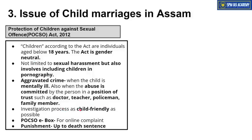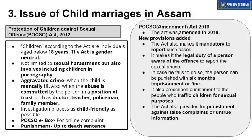Bar bar police station jaane ki zarurat na pade — online complaint karne ki bhi suvidha banayi gayi hai. Iske liye POCSO e-box banaya gaya hai. POCSO Act ke antargat jo highest level of punishment hai, that is up to death sentence. POCSO Act ko 2019 mein amend bhi kiya gaya tha aur kuch naye provisions bhi laaye gaye the.